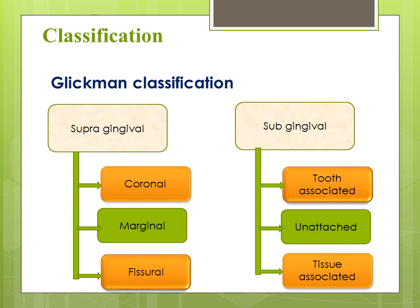Coming to the classification. Glickman has classified plaque into supra-gingival plaque and sub-gingival plaque. Supra-gingival plaque is found at or above the gingival margin; when in direct contact with the gingival margin it is referred to as marginal plaque. Sub-gingival plaque is found below the gingival margin between the tooth and the gingival pocket epithelium. Supra-gingival plaque is further divided into coronal, marginal, or fissural plaque, whereas sub-gingival plaque is divided into tooth-associated, unattached, or tissue-associated sub-gingival plaque.